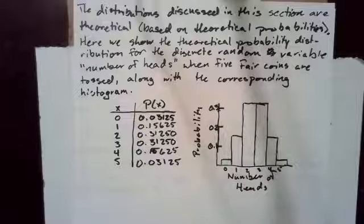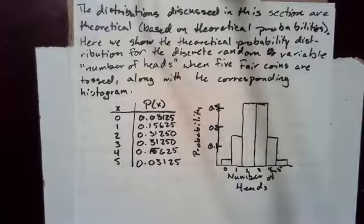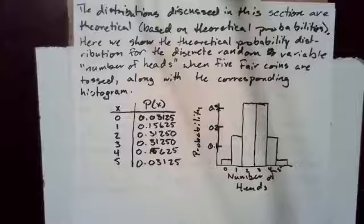The distributions discussed in this section are theoretical, based on theoretical probabilities. Here we show the theoretical probability distribution for the discrete random variable number of heads when five fair coins are tossed, along with the corresponding histogram.